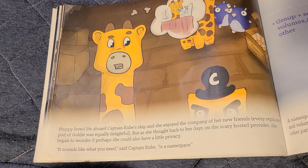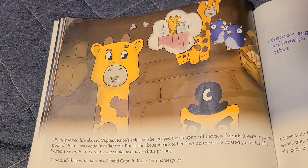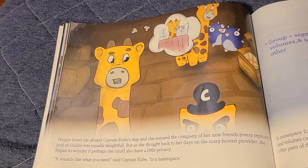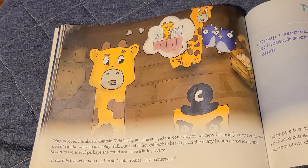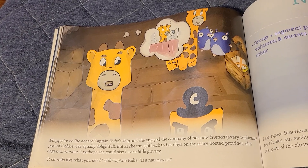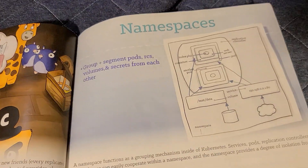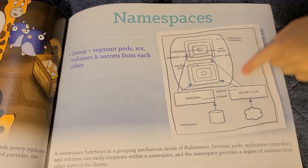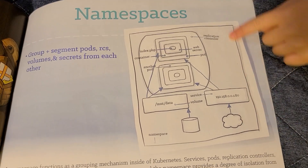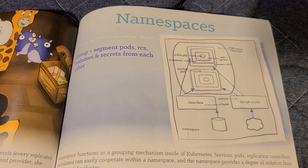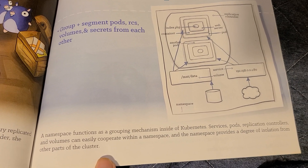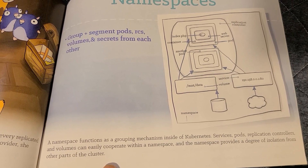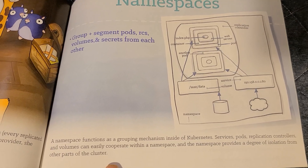Pippi loved life aboard Captain Cube's ship and she had enjoyed the company of her new friends. Every replicated pod of Goldie was equally delightful. But as she thought back to her days on the scary hosted provider, she began to wonder if perhaps she could also have a little privacy. It sounds like what you need, said Captain Cube, is a namespace. A namespace functions as a grouping mechanism inside of Kubernetes. Services, pods, replication controllers, and volumes can easily cooperate within a namespace, and the namespace provides a degree of isolation from other parts of the cluster.